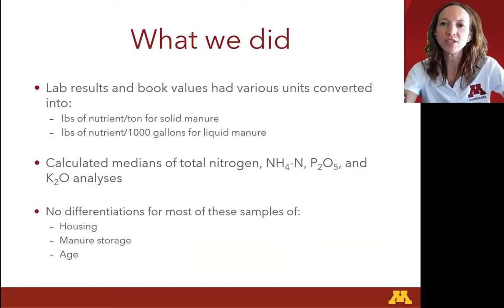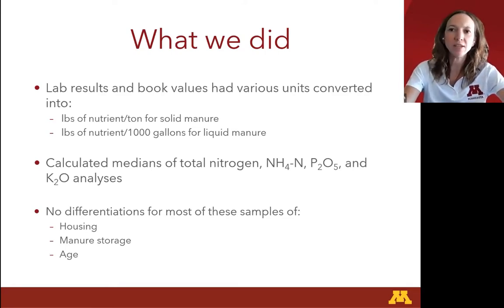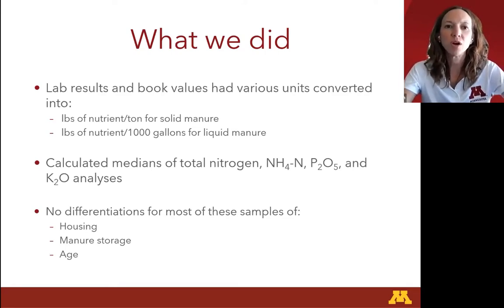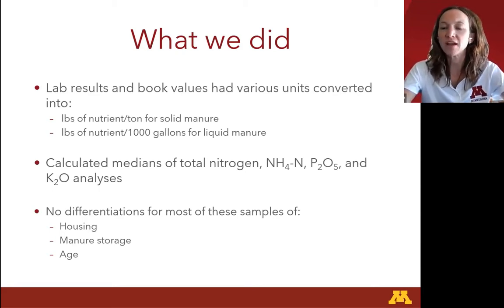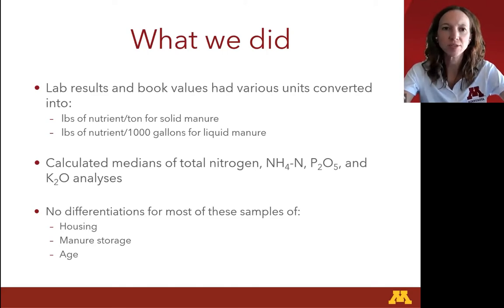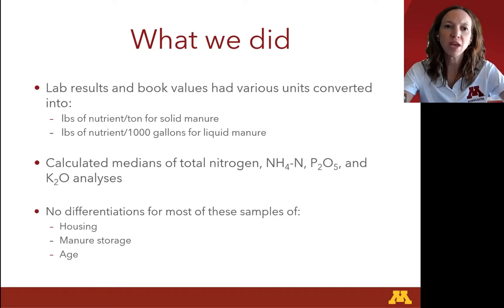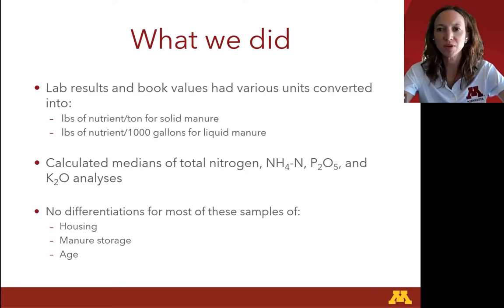As you can imagine, different laboratories report and name things differently. We put all these lab results and book values into pounds of nutrient per ton for solid manure, or pounds of nutrients per thousand gallons for liquid manure, so we're all comparing similar numbers. We calculated the medians for total nitrogen, ammonium nitrogen, P2O5 for phosphorus, and K2O for potassium, choosing the median to avoid skewness. We have no differentiations for housing, winter storage, and age for the majority of those samples, so those are comparisons we will not be able to make with this data set.